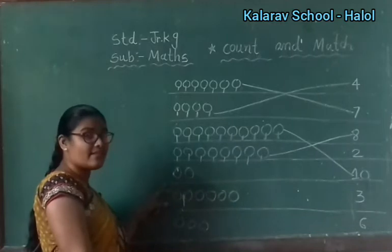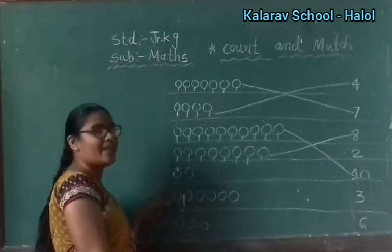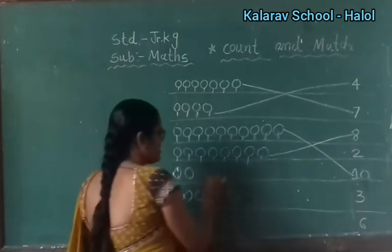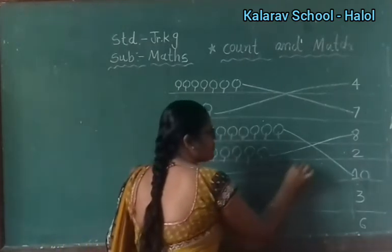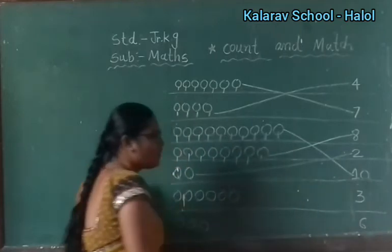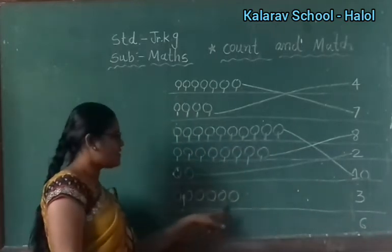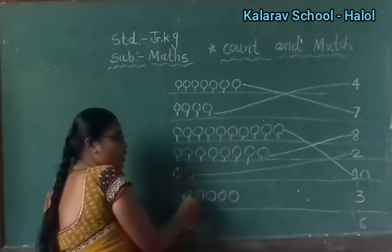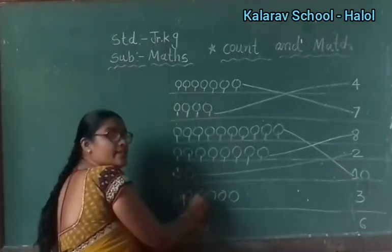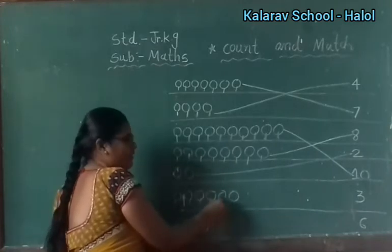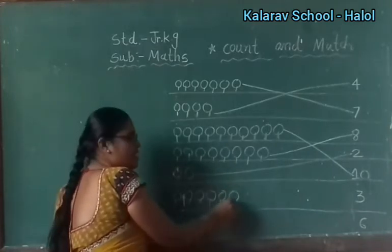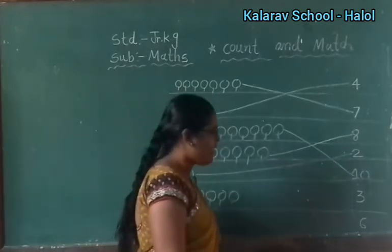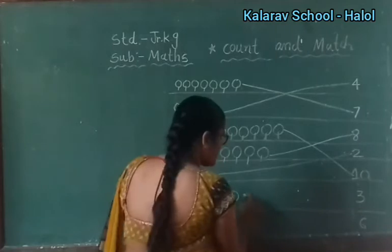Now see, how many circles? Come and tell me. Yes: 1, 2. So where is the number 2? Yes, here. So match it. Now how many circles here? Let's count: 1, 2, 3, 4, 5, 6. How many circles? 6. So find out the number 6, children. Yes, here — last one. So match it.